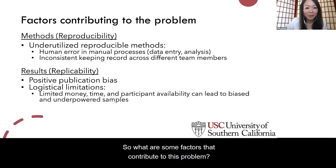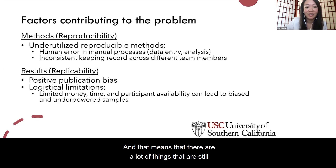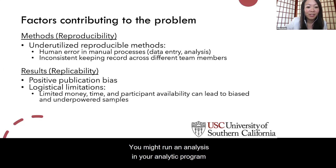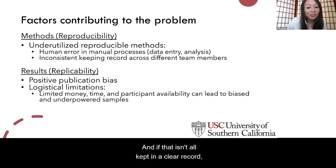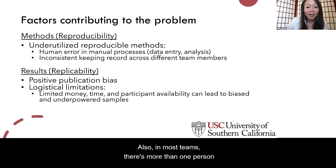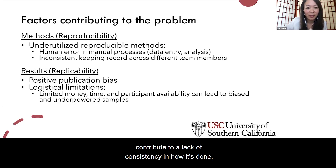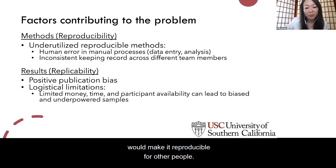So what are some factors that contribute to this problem? For one, there's an underutilization of reproducible methods. A lot of things are still being done manually — data entry and even data analysis. You might run an analysis in SPSS or Excel, make different changes and assumptions to the statistics, add or remove covariates, or change the data source. If that isn't all kept in a clear record, it's very possible for errors to occur. Also, in most teams there's more than one person working on a study, and inconsistent record keeping across team members can contribute to a lack of consistency in how things are done and reported, making it harder for others to reproduce.